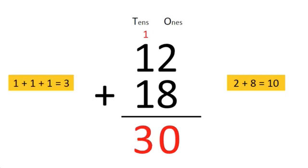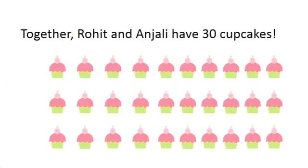That gives you 3 in the tens place and 0 in the ones place — that is 30. Together, Rohit and Anjali have 30 cupcakes.